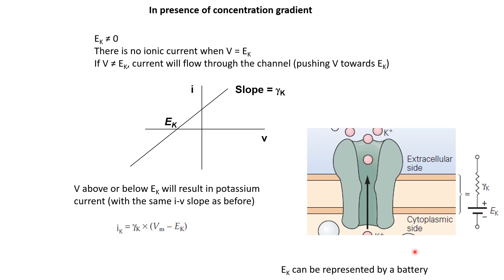We can now update our electrical representation of this part of the neuronal membrane. The channel is still represented by the conductance or resistance γK, and the equilibrium potential can be thought of as a battery. This battery for potassium ions is oriented so that it makes the inside more negative compared to the outside. If outside is zero, then inside will be minus 75 millivolts. If you apply a voltage of minus 75 here, the voltage difference becomes zero and there will be no net current through the ion channel. But if this value differs from Ek, a resulting voltage difference will drive current through the channel.